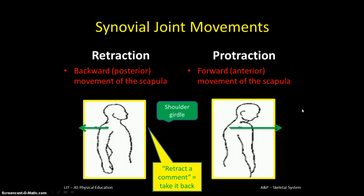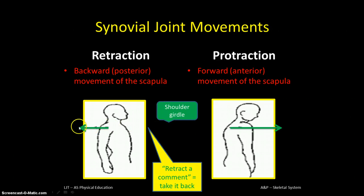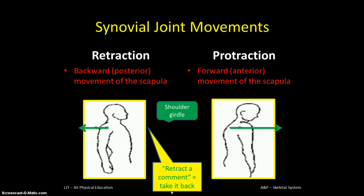Less common terms: retraction and protraction. If you're sitting on a rowing machine or in a rowing boat, the action of reaching forward with the oars would involve protraction — forward movement of your shoulder blades or scapula. As you pull back on the stroke, you would retract your scapula — that's retraction, the pulling backward. A memory aid: if you've said something you wish you hadn't, you want to retract that comment — take it back — so retraction is backward.